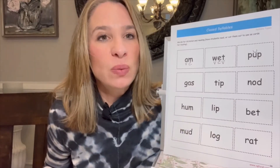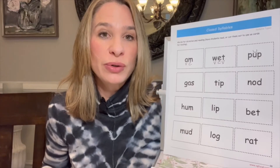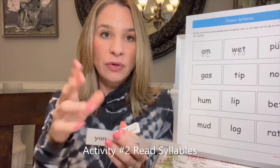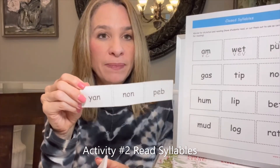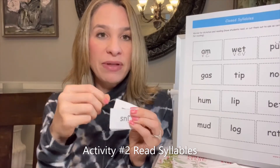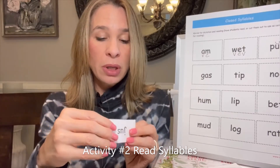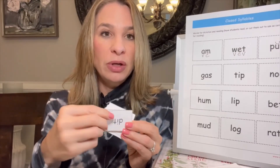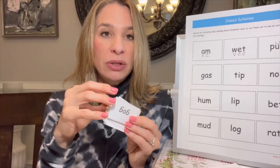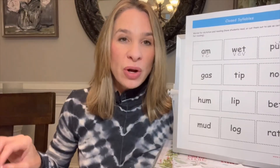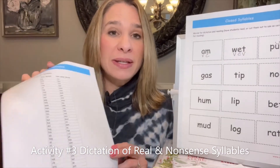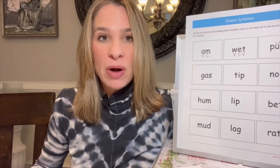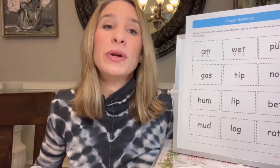Also be sure to do nonsense words as well — it's important not to just do actual words. Another activity is to have word cards cut out, from my Scope and Sequence workbook, on heavier stock. You can leave them in strips or cut to individual cards and have students read through them. You should also be dictating words — that's another activity. You have a list of real words and a list of nonsense words, and you should never skip the auditory portion. A student should be able to hear what they're seeing and writing.